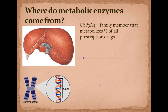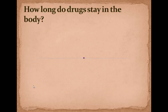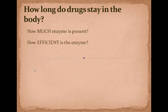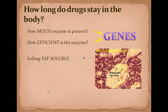So prescription drugs — these metabolic enzymes are determined by your genes. How long do drugs stay in the body? How much enzyme is present? How efficient is the enzyme? This is determined by your genes, but there are other factors not determined by your genes — like, is the drug fat-soluble? That determines whether it gets into your cells easily, but once it gets into your cells, it becomes difficult to get it out, so it lasts a lot longer.